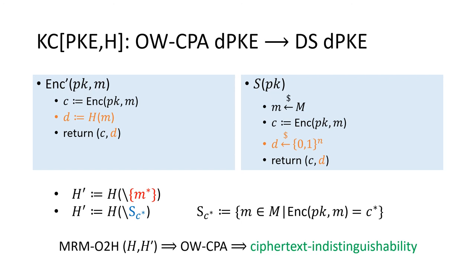However, we can replace M* with a set in which are messages that can be encrypted to the challenge ciphertext. With this definition, h' can be simulated by testing whether the query message is in these sets or not. Then, the ciphertext indistinguishability can be proved.